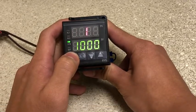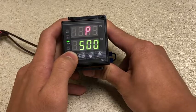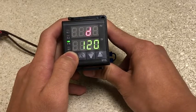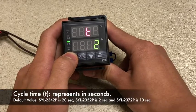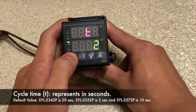I stands for integral time. P stands for proportional constant. D stands for derivative time. T is your cycle time represented in seconds. Just keep it at 2 for SSR output.